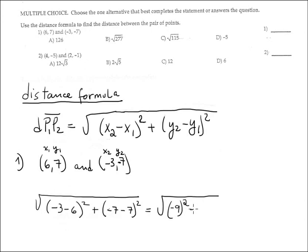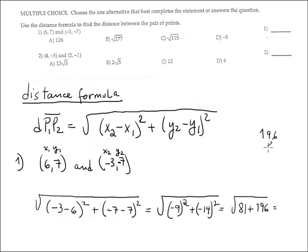That's 81. And for the Y part: negative 7 minus positive 7 is negative 14, and negative 14 squared. So far we have 81 plus 14 squared. 14 squared is 196. When you add them together: 196 plus 81 — carry the 1 — is 277. So the answer is square root of 277, which corresponds with option B.